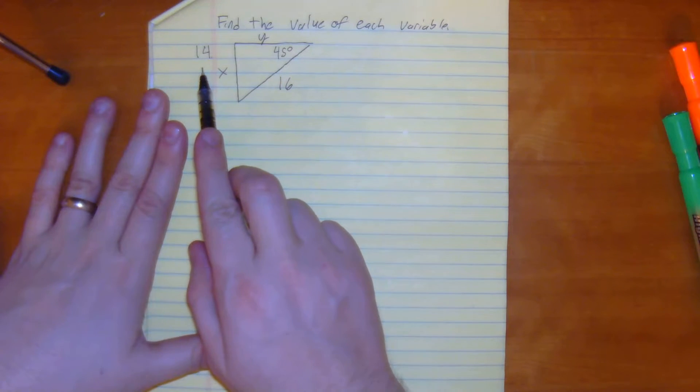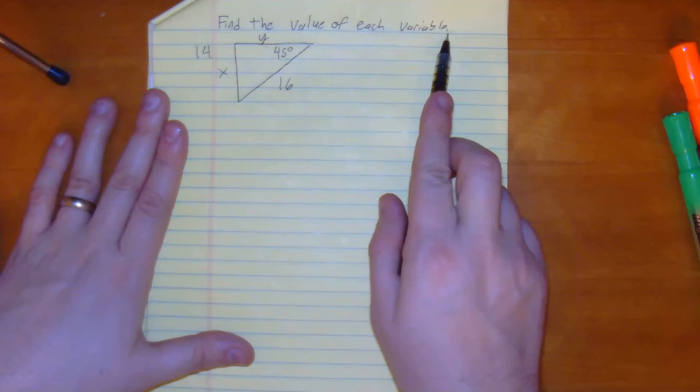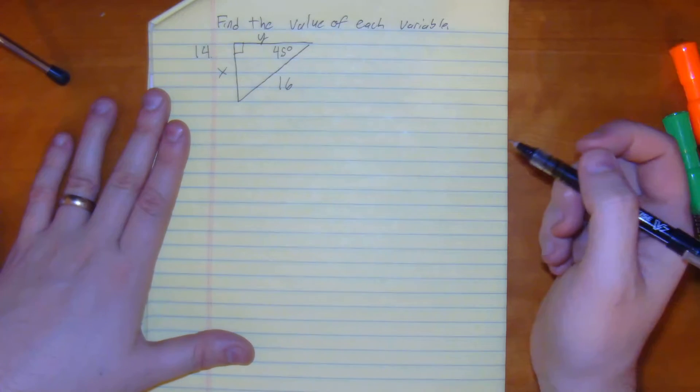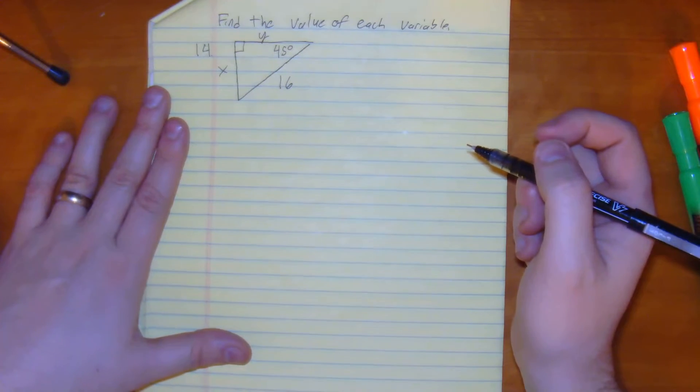We're looking at number 14. Number 14 says find the value of each variable. We have a 45 degree right angle, a 45-45-90 triangle.